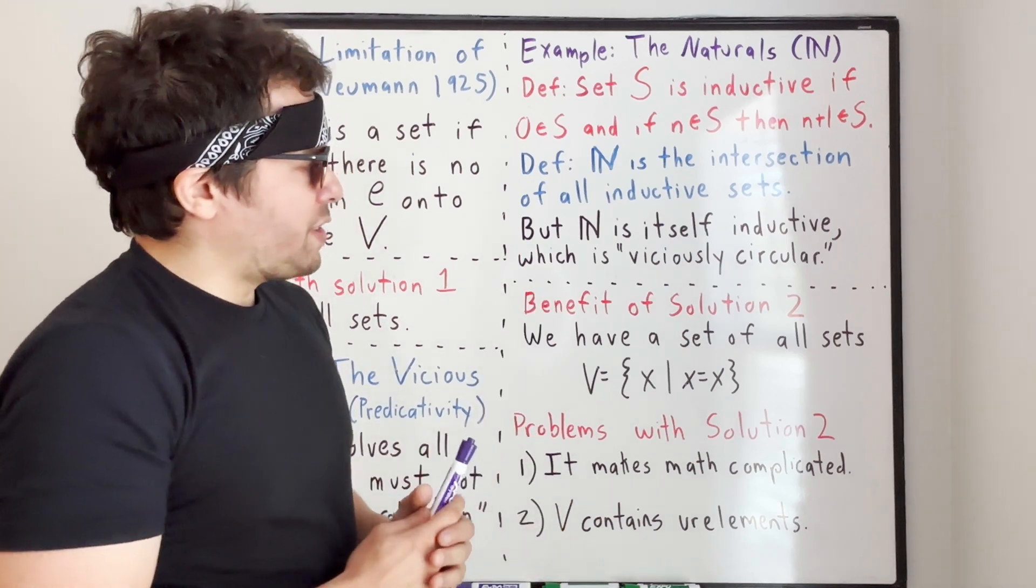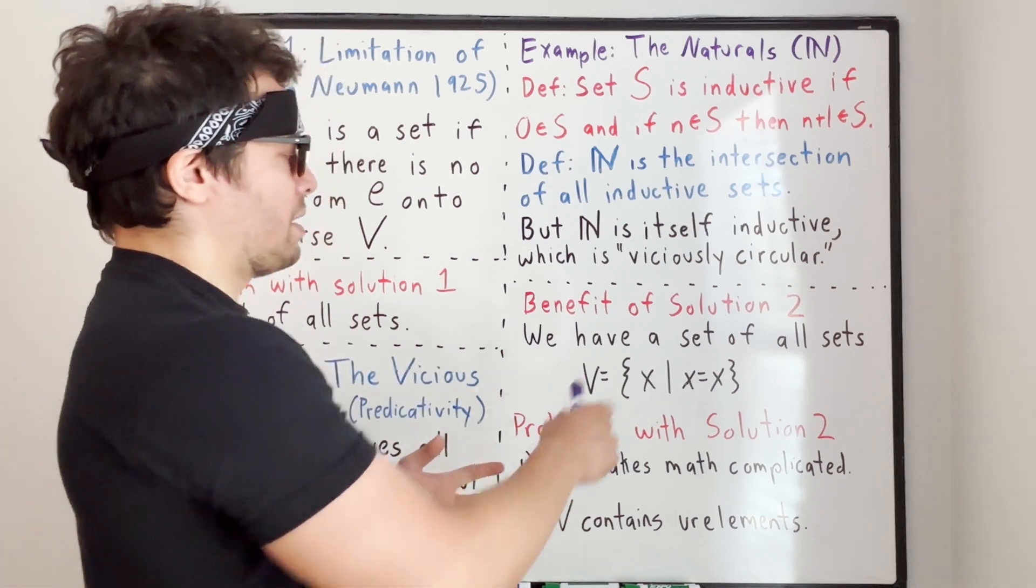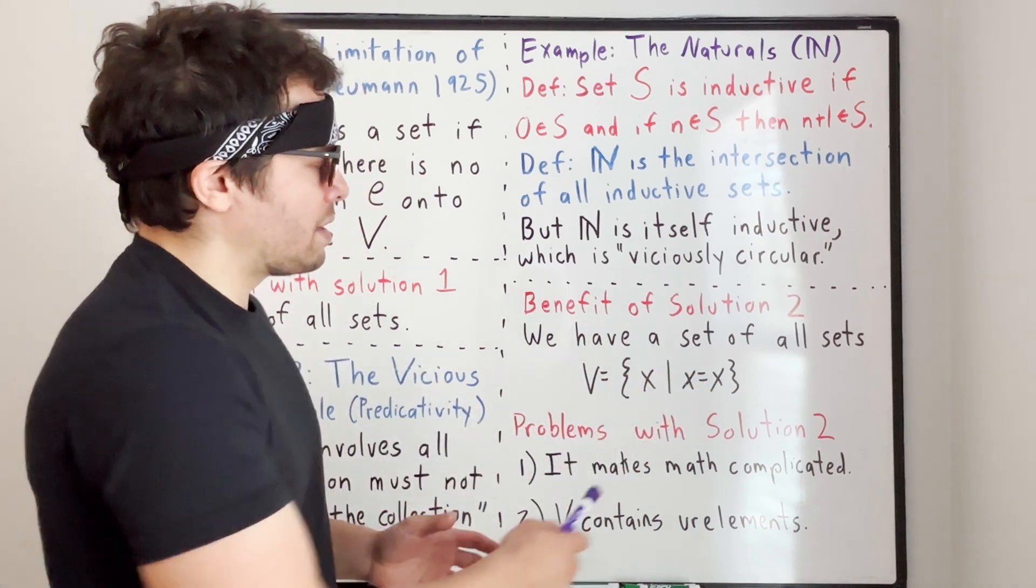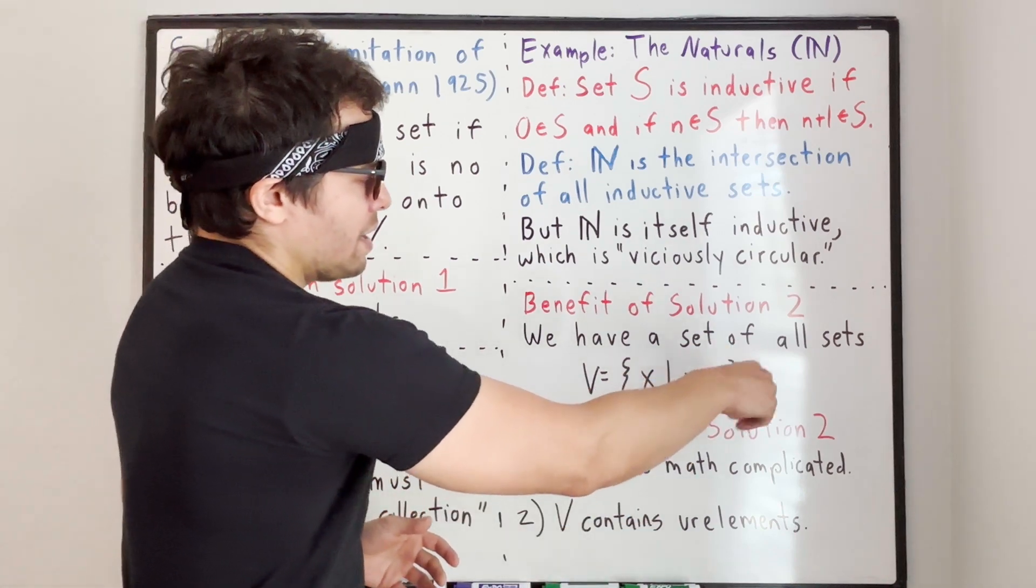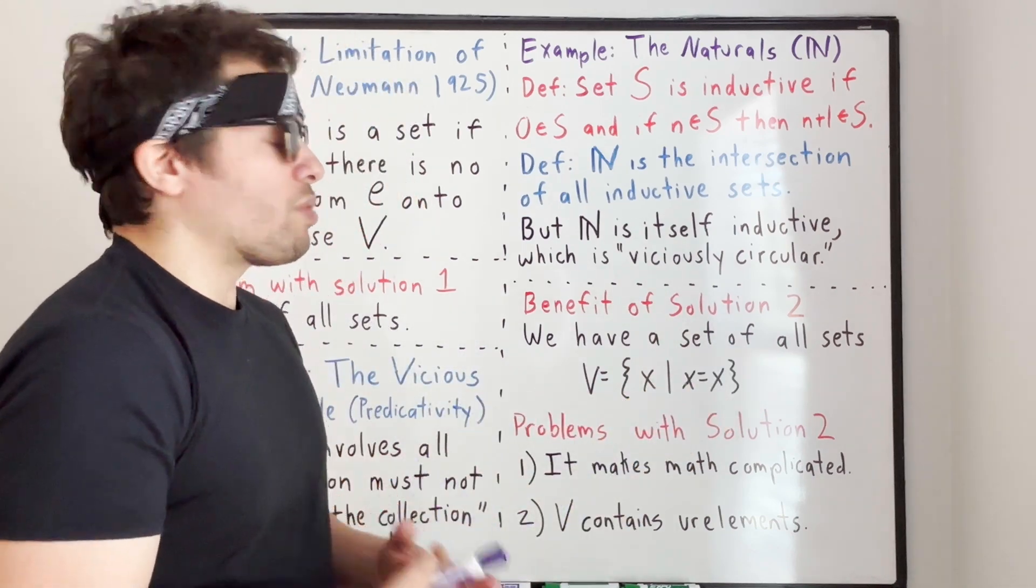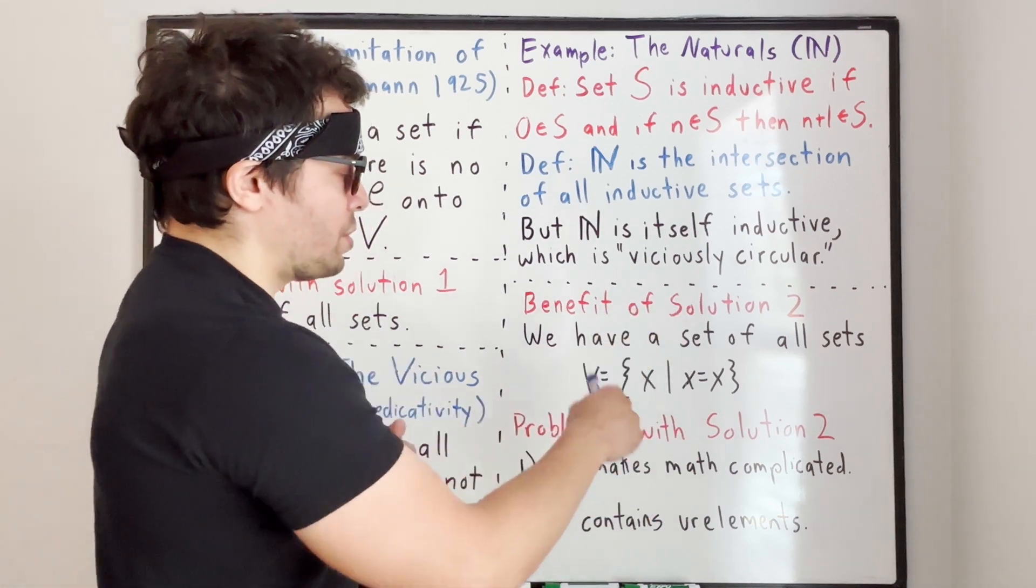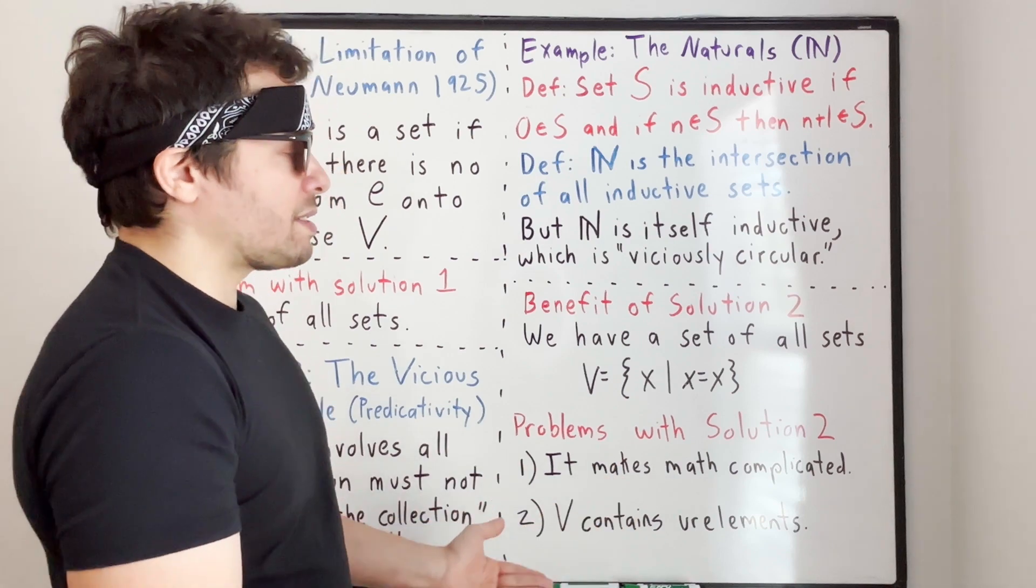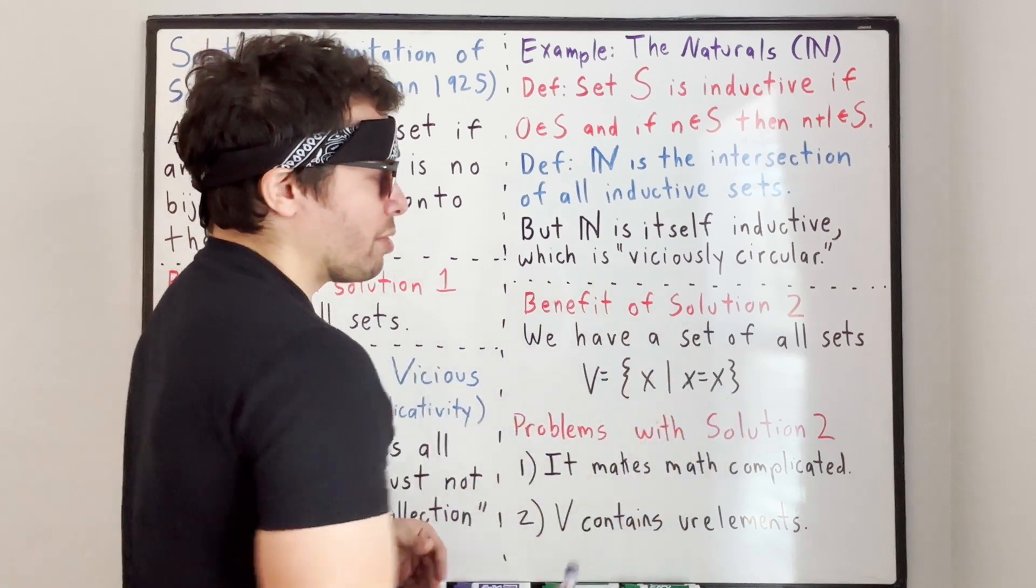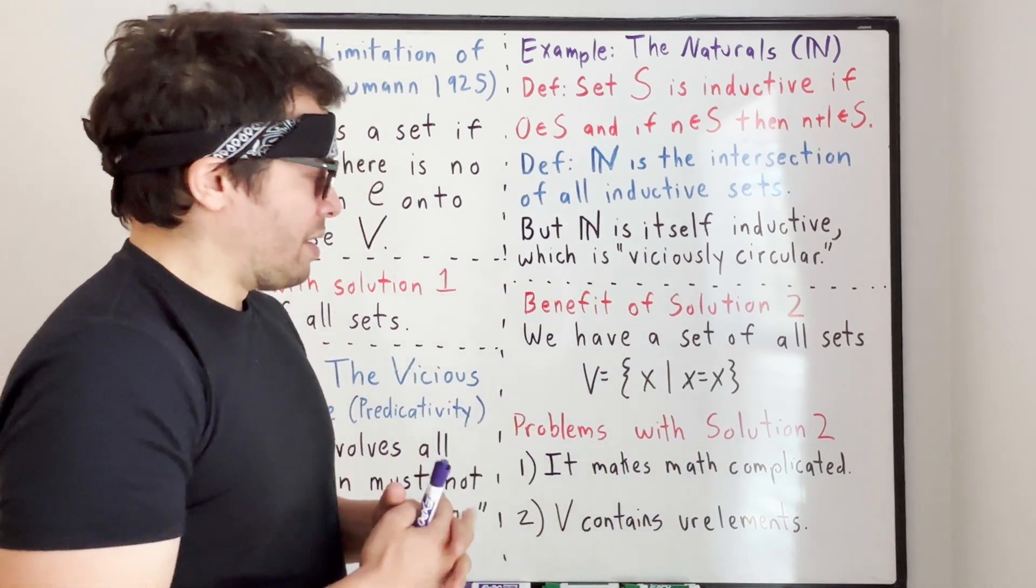One of the benefits of Solution 2, as we mentioned before, is we actually do have a set of all sets. And I have it written here, V = {x | x = x}. And the key is notice that the definition here, x equals x, it does not reference the totality being defined. One thing interesting with Solution 2 is the set of all sets is actually an element of the set of all sets. But since the definition does not refer to the totality, there's nothing impredicative here.